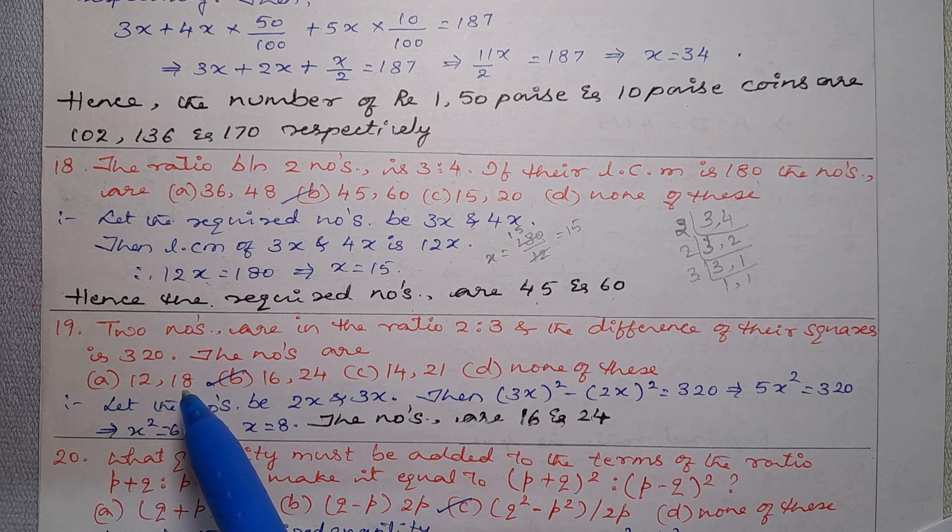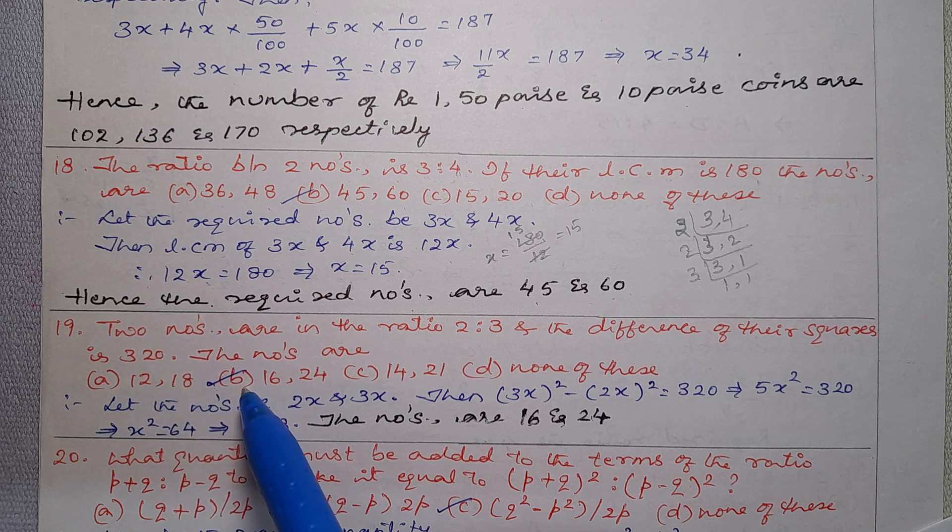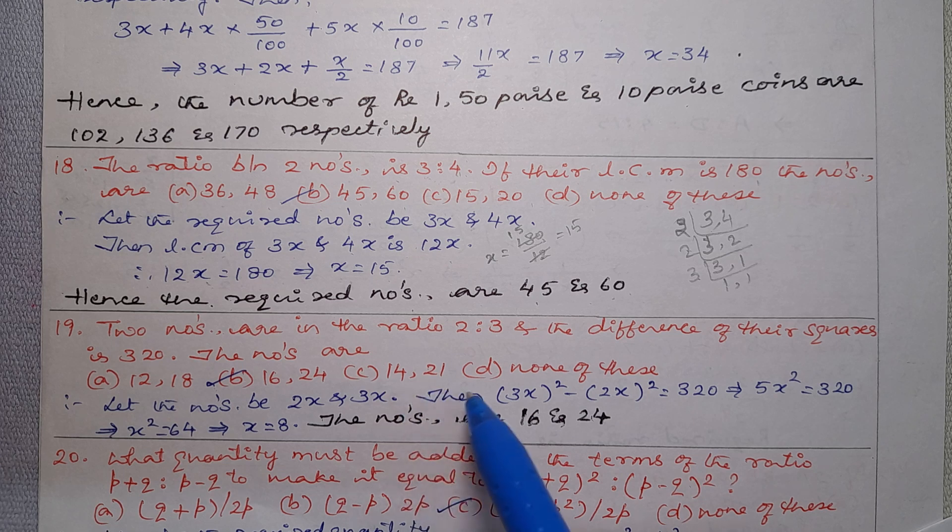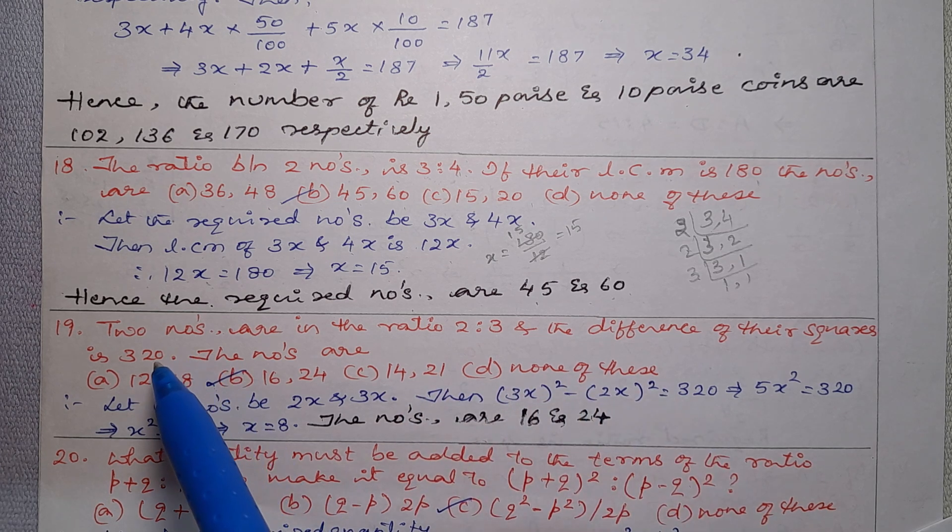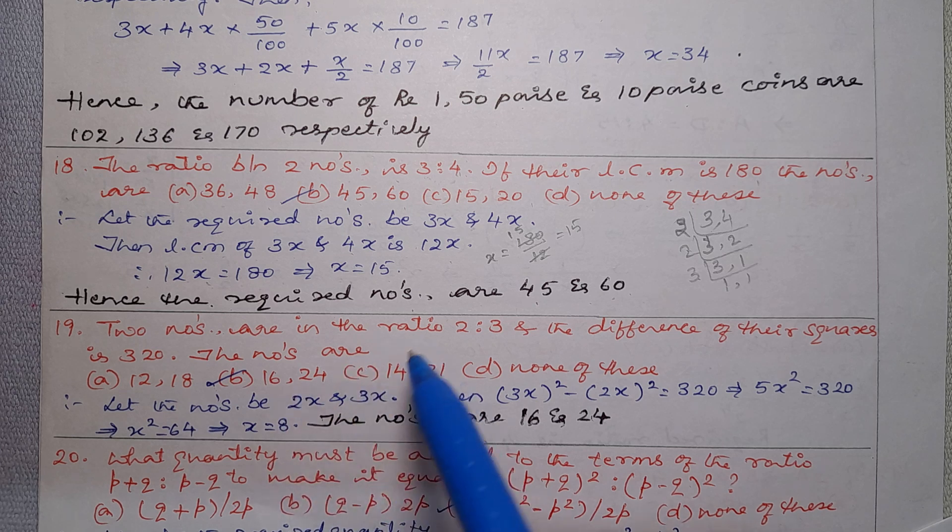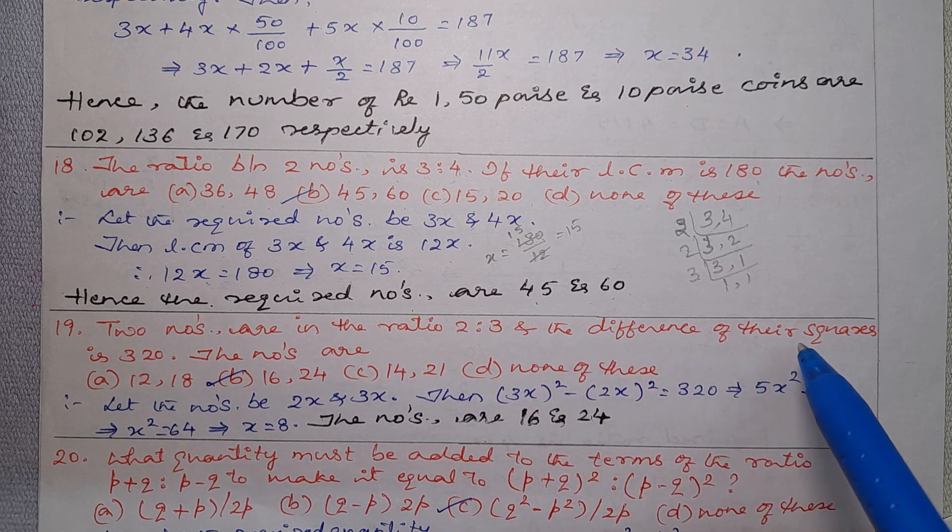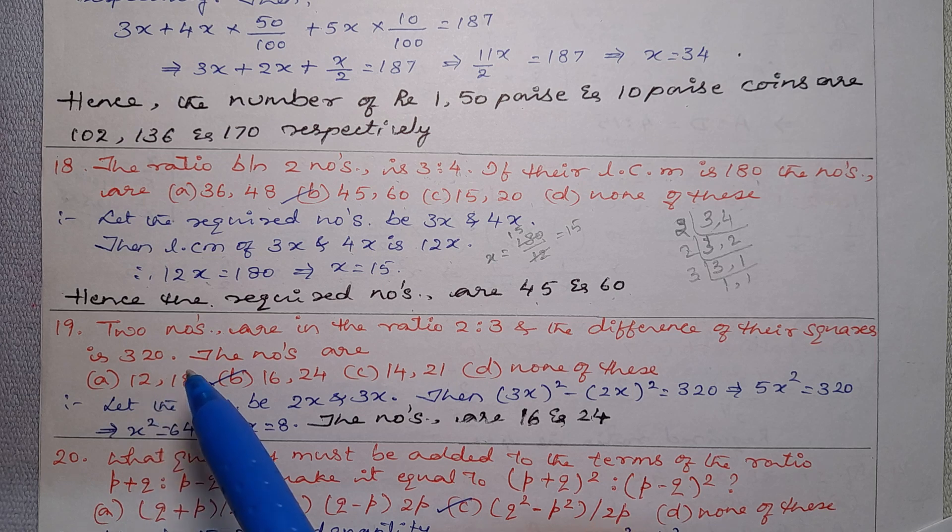12, 18. Option B: 16, 24. Option C: 14, 21. Option D: None of these. Two numbers are in the ratio of 2 is to 3, and the difference of their squares is 320.